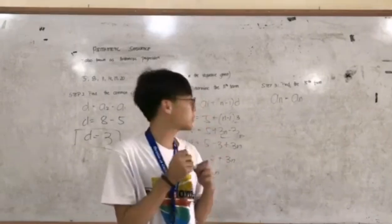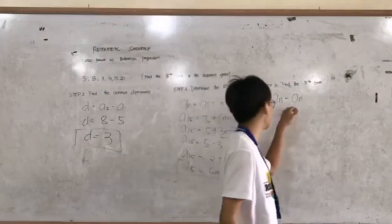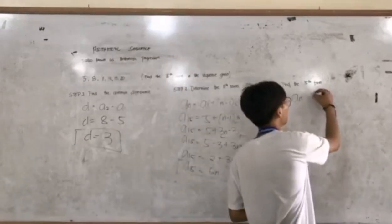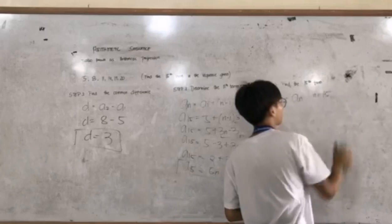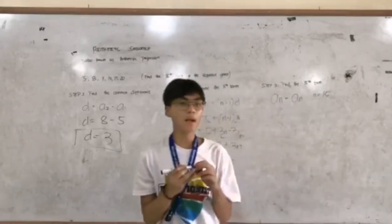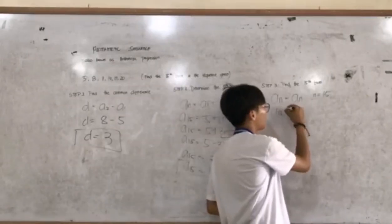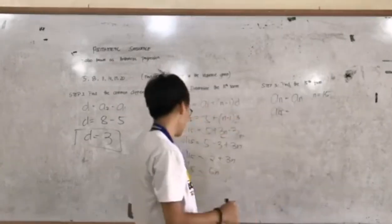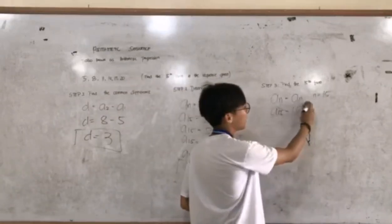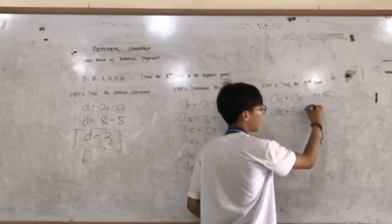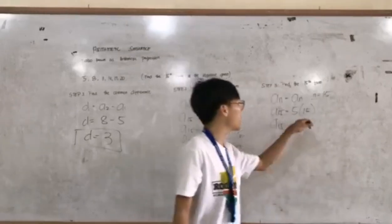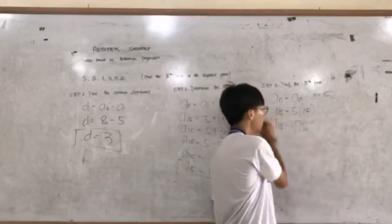Step number three: find the 15th term. In the formula a sub n, we just need to convert n to 15. So a sub 15 equals — substituting n with 15 — 5 multiplied by 15, which equals 75. So this is our nth term value.